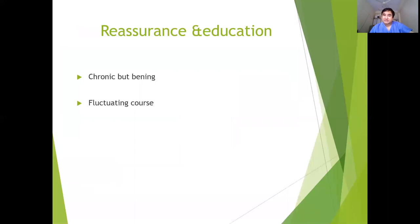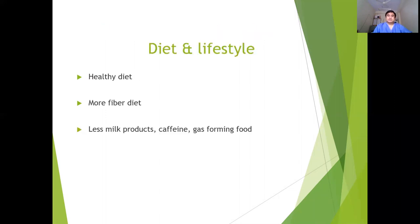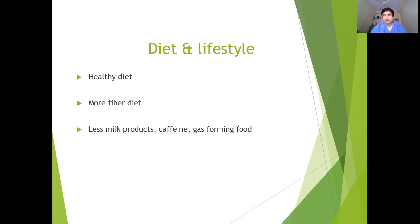Step one is reassurance and education — counsel the patient regarding the chronic but benign and fluctuating nature of this condition. For diet, they should take a healthy diet and reduce milk products, meat products, caffeine, and gas-forming foods like radish, cauliflower, cabbage, and beans. They should be encouraged to take more fiber in their diet, which is more useful in constipation-predominant IBS.